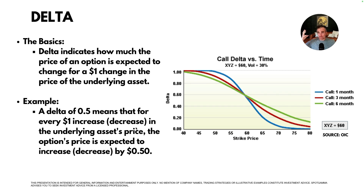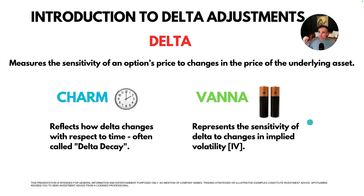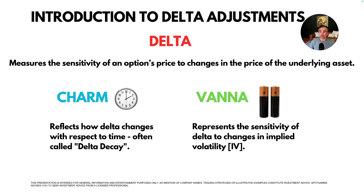While you may have a 50 Delta option today, in a month, all else equal, that option Delta may be 60 or 40 — it could shift around. Now that you understand that Delta is a measure of sensitivity to the option's price, let's talk about Charm and Vanna. Charm, which a lot of people call Delta decay, describes how Delta changes over time. As we march forward towards expiration, the Delta of your option is changing as well. Charm relates to the time decay of Delta.